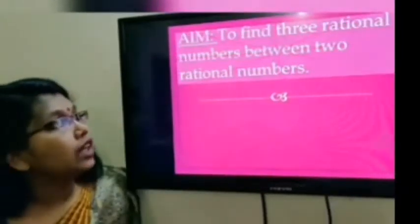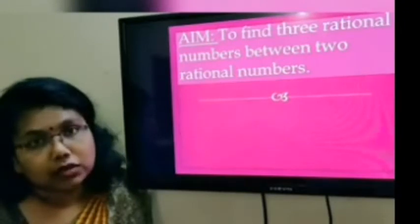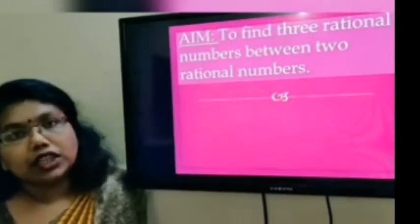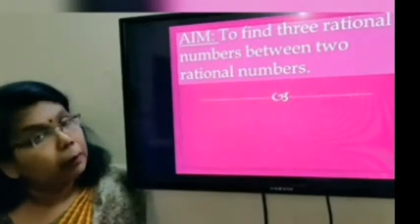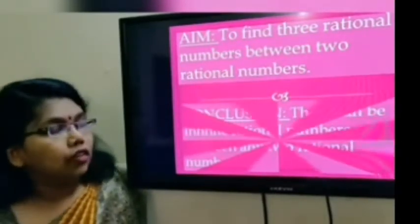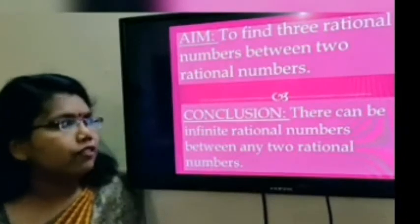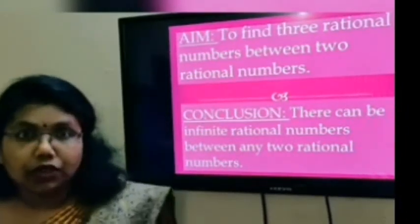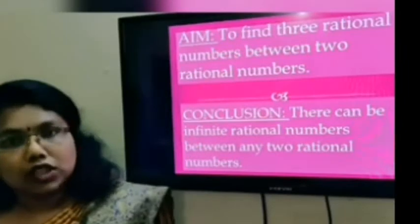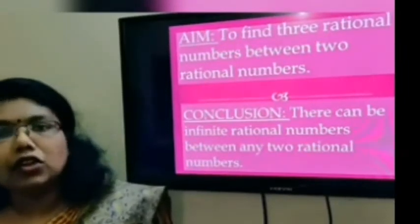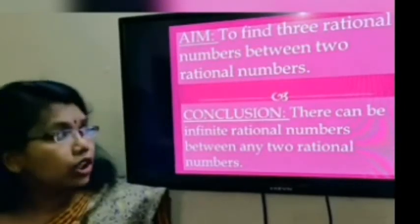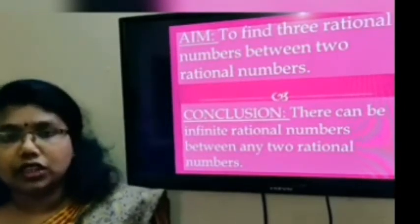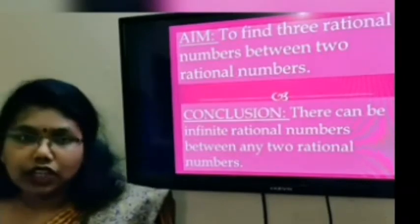Now, the aim of the activity is to find 3 rational numbers between 2 rational numbers. Our 2 rational numbers are 0 and 1, and we are going to find at least 3 rational numbers between them using the paper folding method. Our conclusion will be that there can be infinite rational numbers between any 2 rational numbers, because our paper can be as long as we want and we can have any number of foldings.